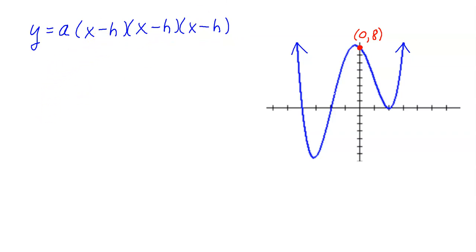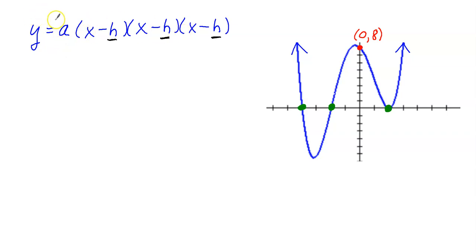What I'm going to do now is fill in those X intercepts. We have those three X intercepts, and I'm going to substitute these three X intercepts for H in this general equation — substituting it for H here, here, and here. Before I do that, don't let the A confuse you. That A is always part of the general equation, and it represents the stretch factor or the vertical shrink of the graph. We'll get to that later.